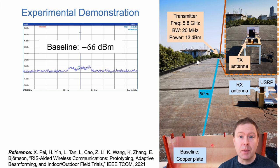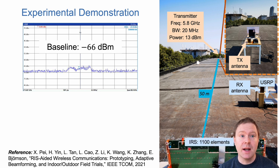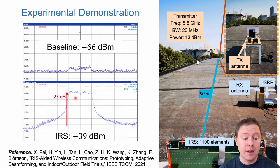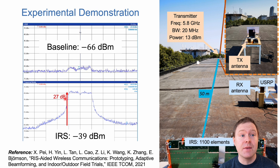But if we take this copper plate and replace it with an intelligent reflecting surface, in this case with 1100 elements, and configure it in the right way, we can make the signal reflected into the receiver antenna instead. When we are doing this in this paper, we get 27 dB stronger signal at the receiver than with the copper plate. This really demonstrates the benefit of using this intelligent reflecting surface.